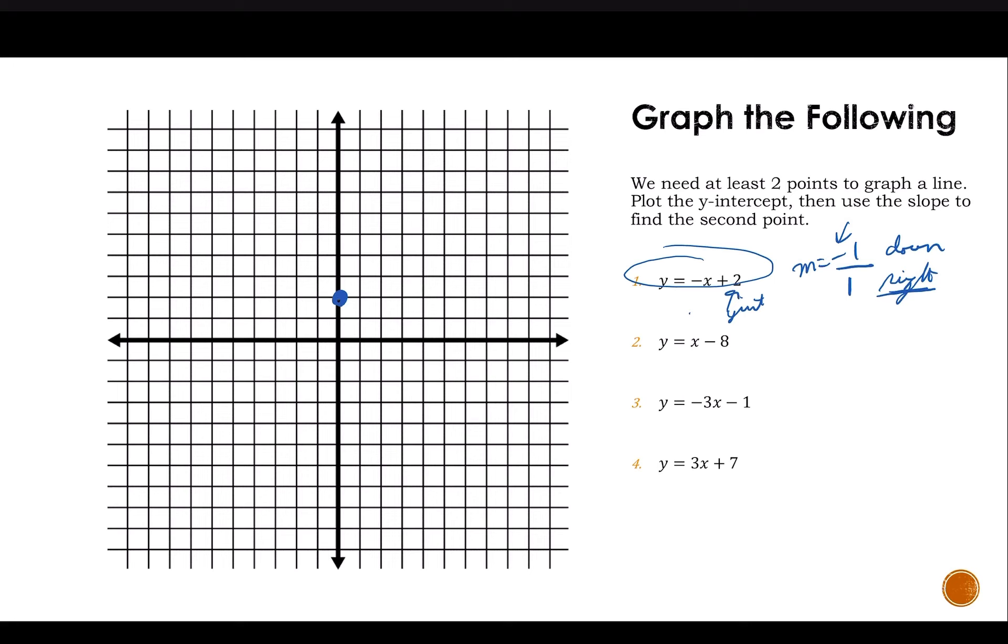So here's my y-intercept of 2, 1, 2. I'm going to go down 1 over 1. And I need to find at least 2 points, because if I have 2 points, there's only 1 possible line I could draw. If I only had 1, I could draw infinitely many lines through that point. But let's practice again. I go down 1 over 1, down 1 over 1.